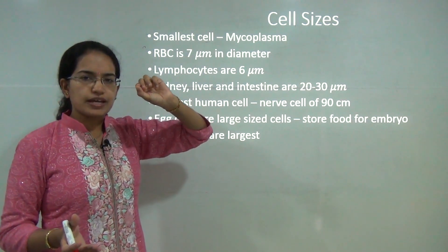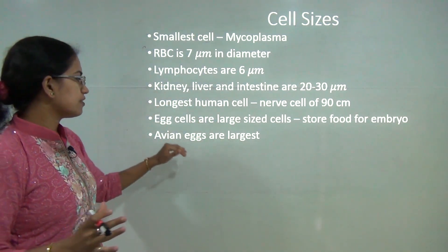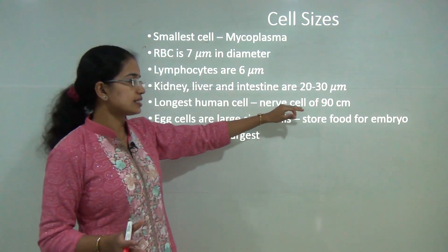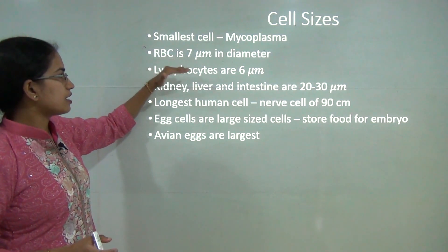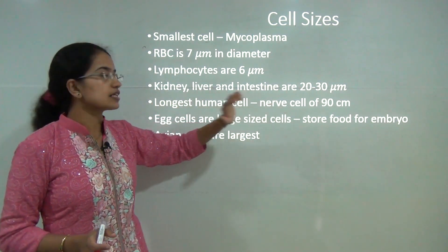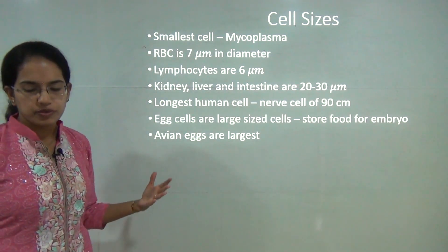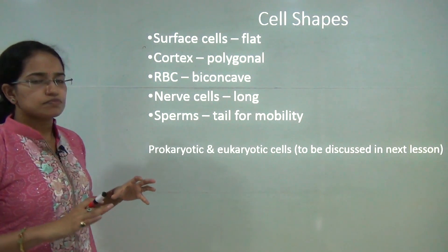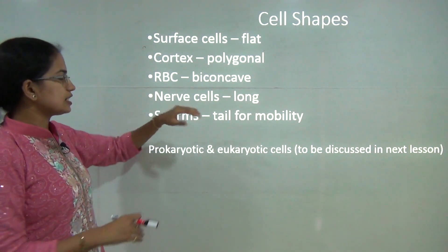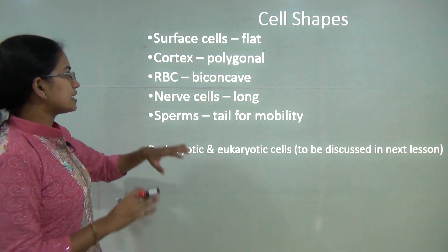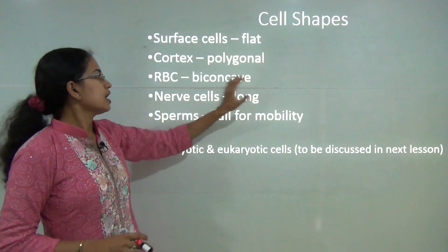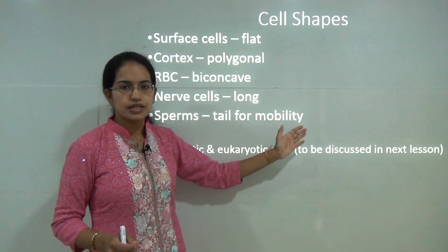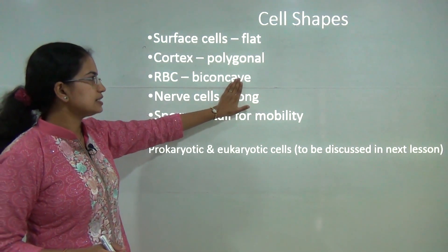Cell sizes range from very minute to larger structures. Avian eggs are considered the largest cells. The longest cell in human beings is the nerve cell. RBCs are 7 micrometers in diameter. The smallest cell is Mycoplasma. The shape of the cell also differs based on its function — flat cells on the surface, polygonal cells in the cortex, biconcave RBCs, long nerve cells, and sperm cells with tails for mobility.